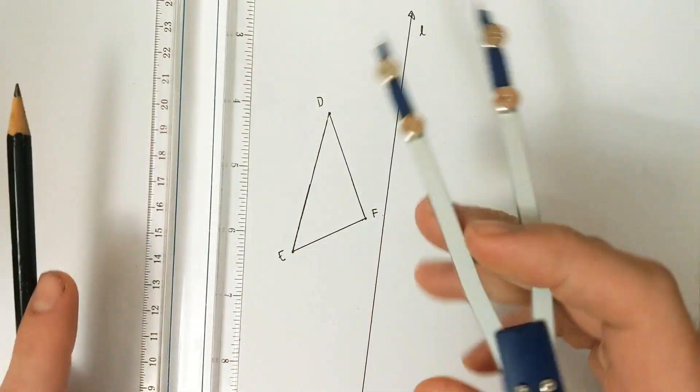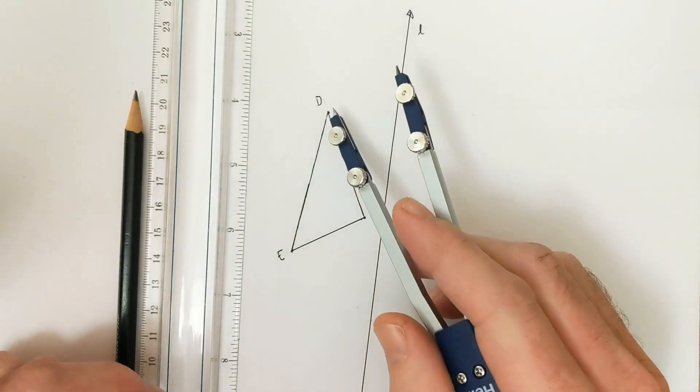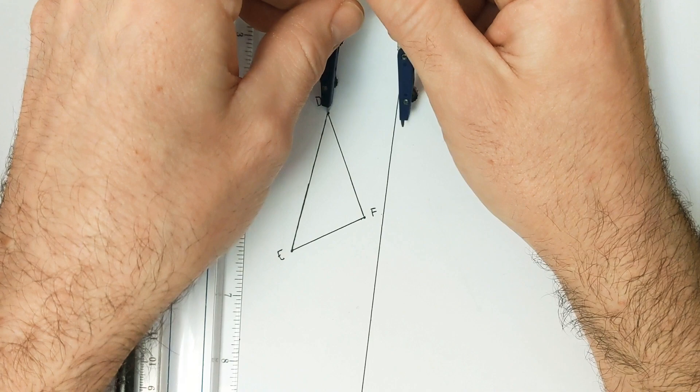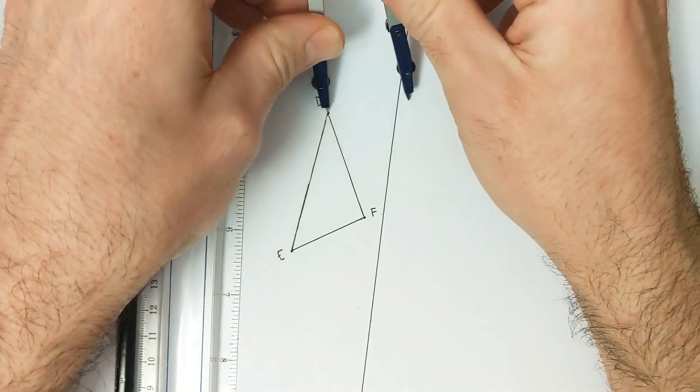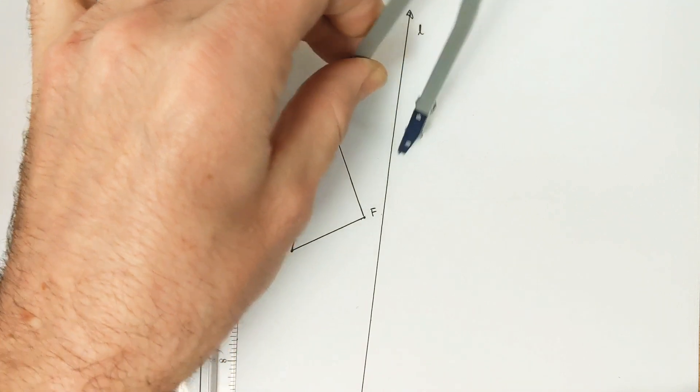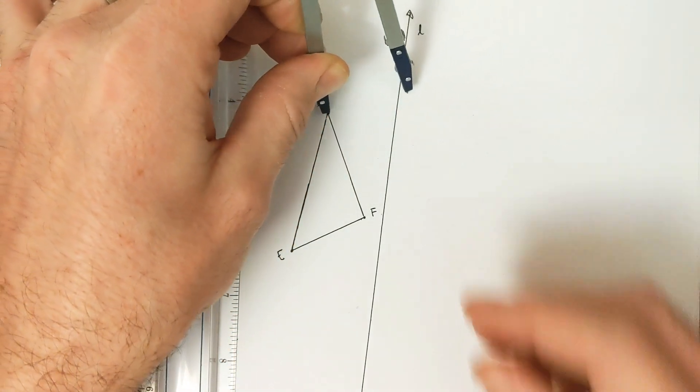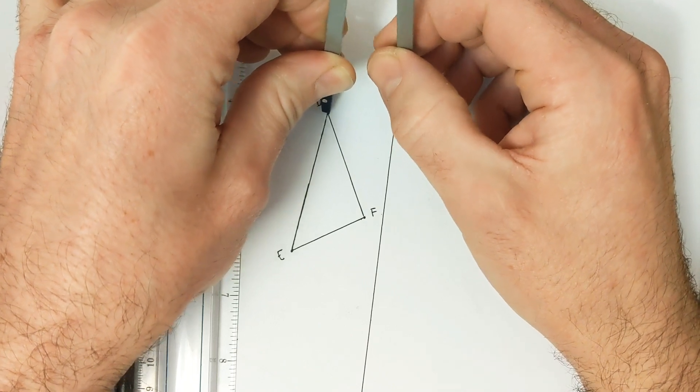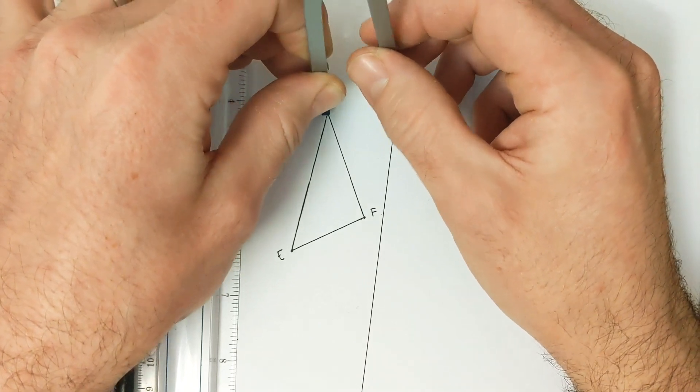So to begin with, we're going to start with point D here. I'm going to choose a radius of the compass that is big enough that it's going to cross the line of reflection in at least two places. So I get two intersection points to work with. So other than that, the size doesn't really matter. You don't want to make it too small because then your intersection points are kind of close together and hard to work with.